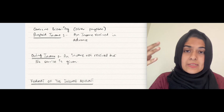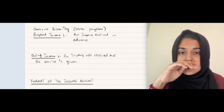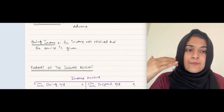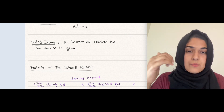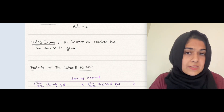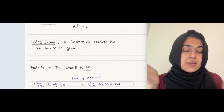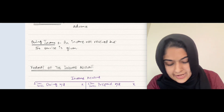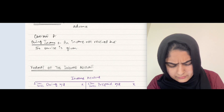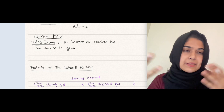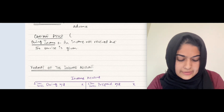Income received in advance is an other payable - it is a current liability. Owing income is when you have given the full service but have not received the money. When you have given the full service and the money has not been received, that is an owing income. You will receive the money in the future, so that becomes your current asset. Because it is a kind of receivable, it is also called other receivables.